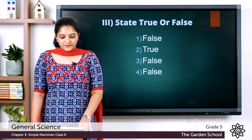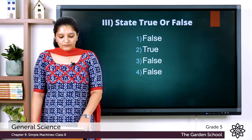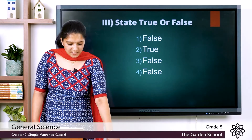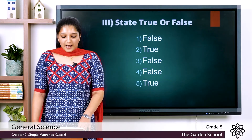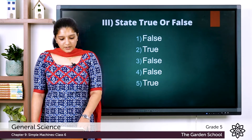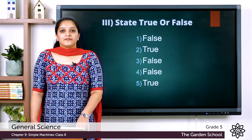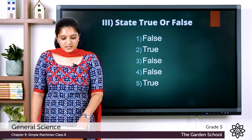The fifth statement: the wheel and axle form a simple machine. The answer is true. The wheel and axle is a type of simple machine. That was all about the true and false questions.